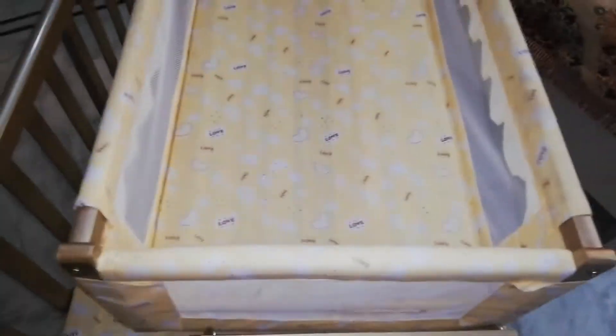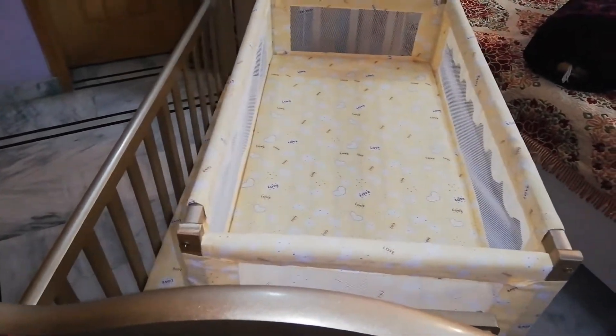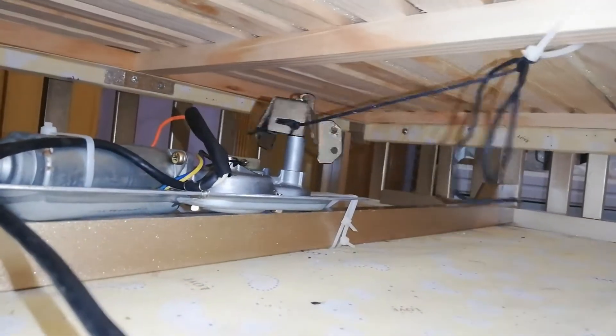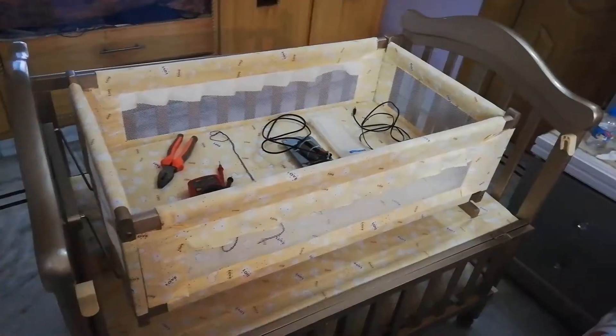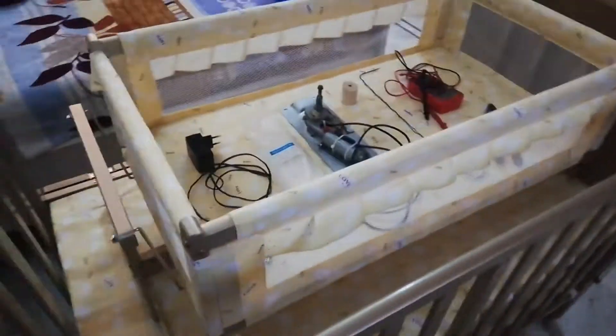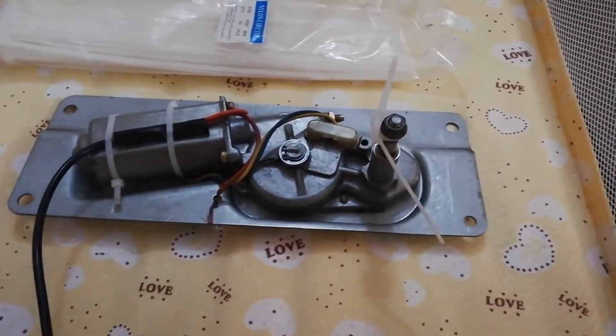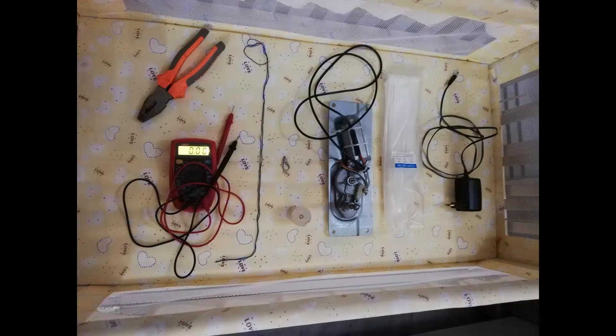Hello and welcome. In this video we will be automating a baby cot. We will be using a car wiper motor for this project, as its to and fro motion can easily be translated into cot movement.